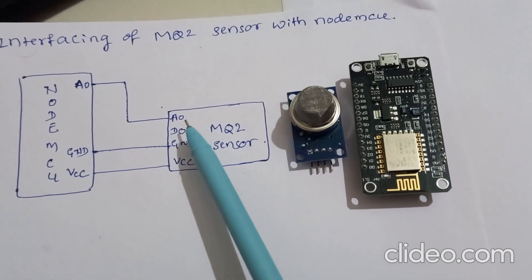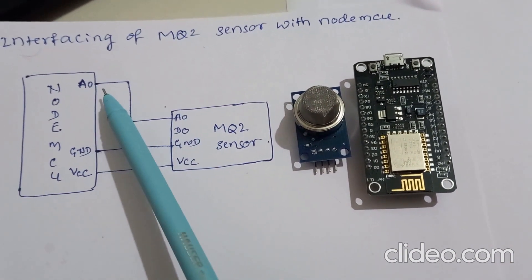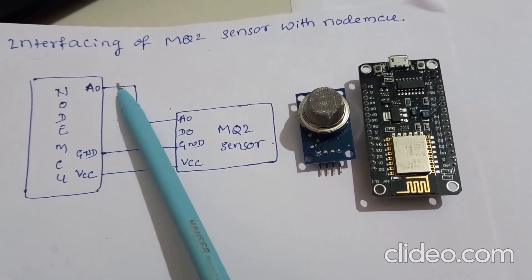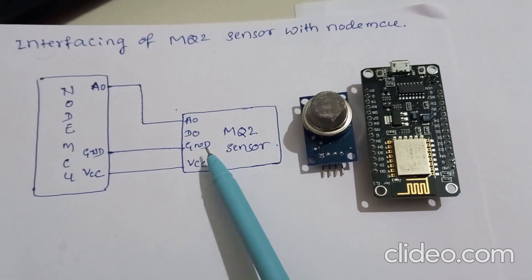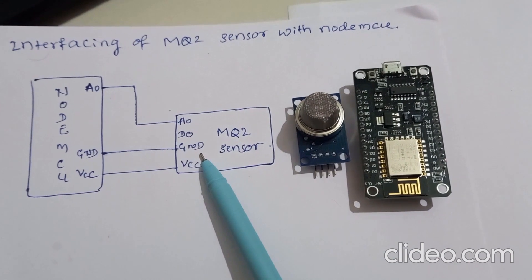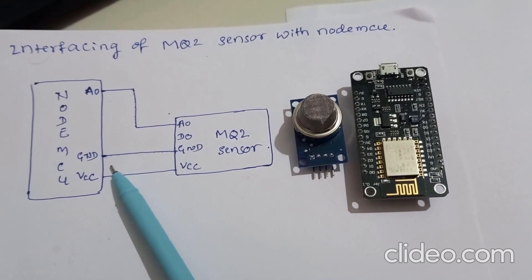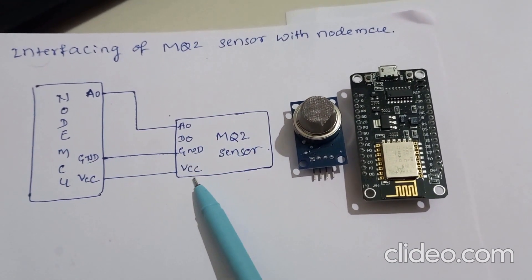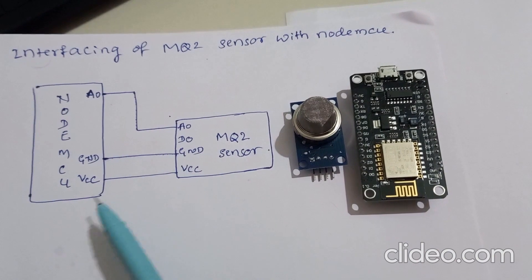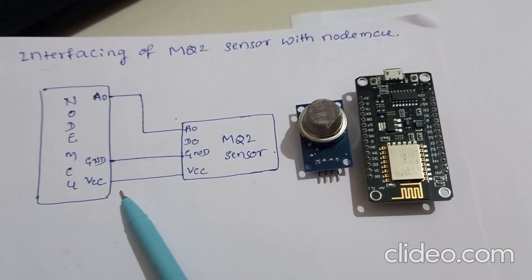The A0 pin of the MQ2 sensor is connected to the analog pin of NodeMCU. The ground pin of the MQ2 sensor is connected to the ground pin of NodeMCU, and the VCC pin of the MQ2 sensor is connected to the VCC pin of NodeMCU.